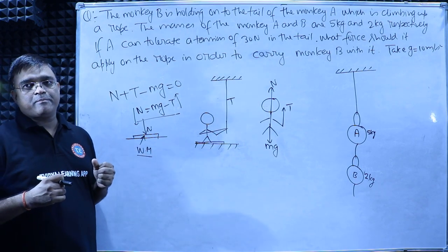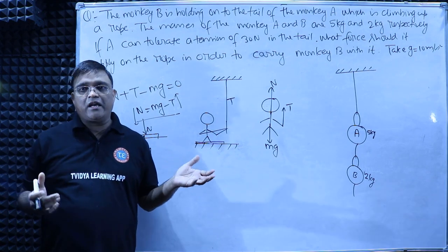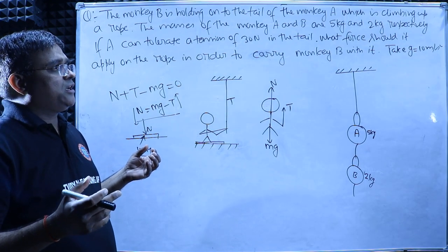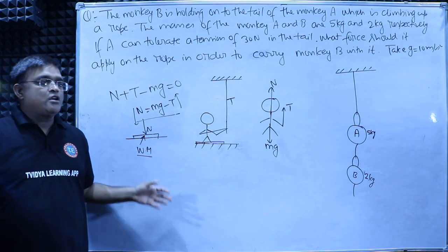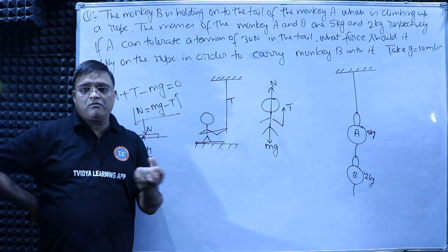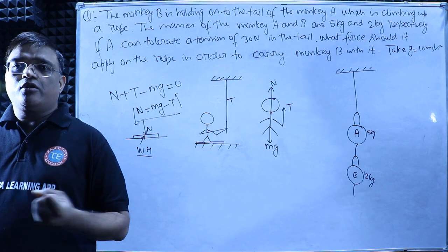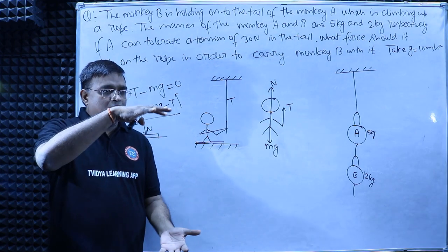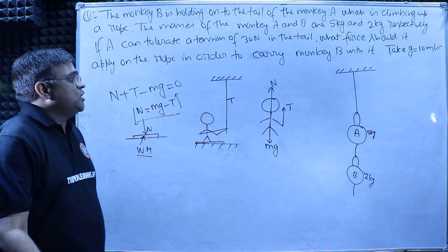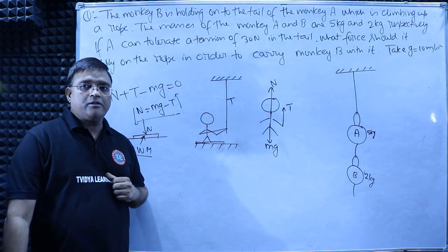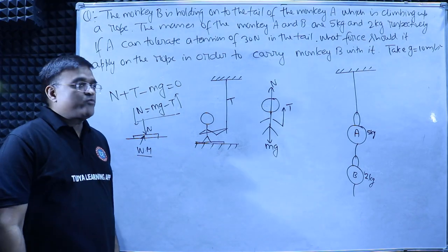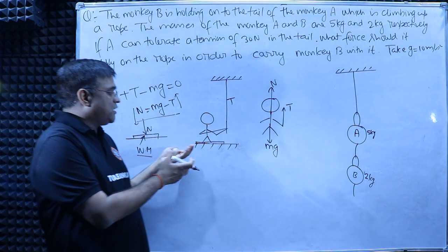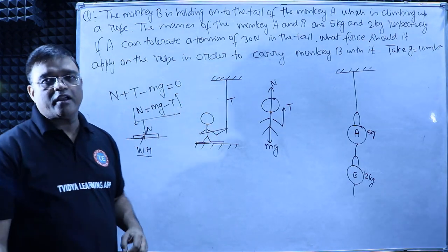Nepalese people — Gurkhas and others — are very strong and fast at rope climbing. Edmund Hillary and Tenzing Norgay were the first to climb Mount Everest. Nepalese tend to be shorter and lighter, yet very strong, which makes them excellent at rope climbing. The minimum force you must apply on the rope equals your weight, then you leave the surface and start climbing.